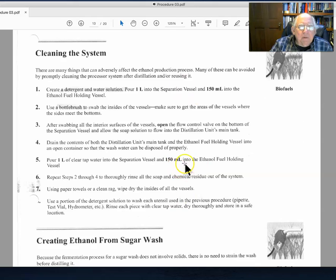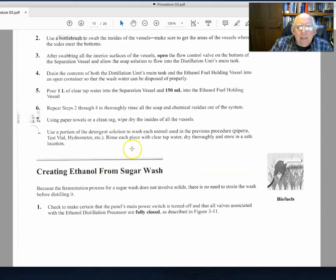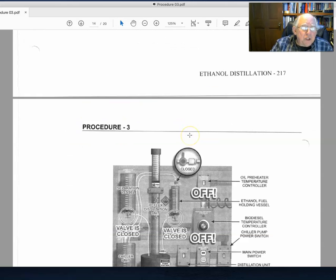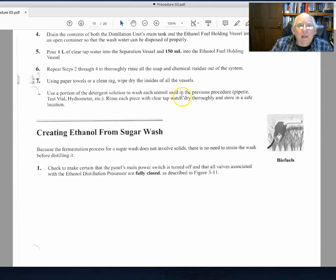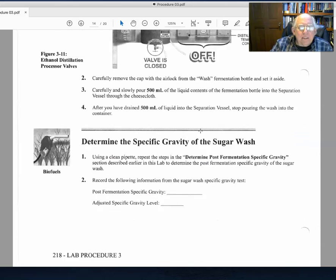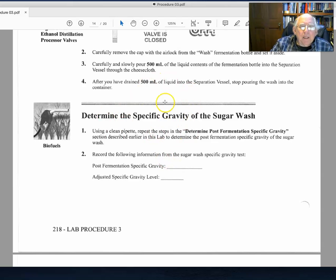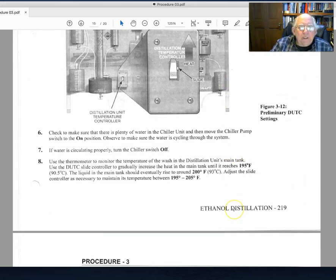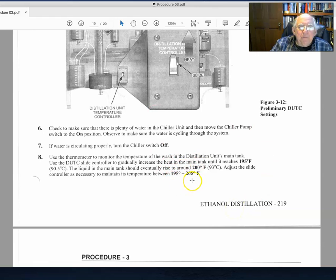Then cleaning up the system and finishing it up. The second part of this procedure is basically doing the same thing with the sugar wash. The sugar wash doesn't need to be strained as much as the cornmeal mash—it wouldn't be necessary because it doesn't involve as many solids. So the process is very much the same, determining the specific gravity before and after the fermentation process.